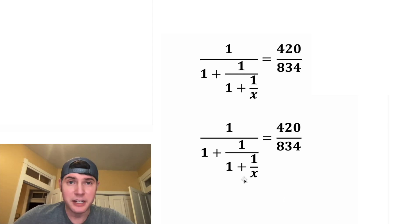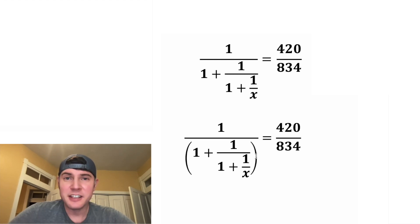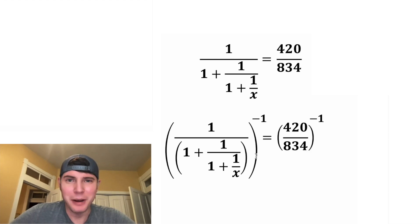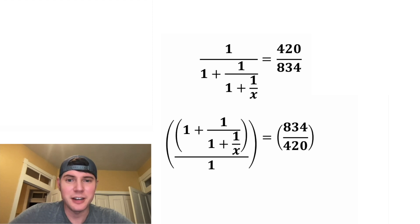Let's group all this stuff in the denominator with parentheses. And then let's do both sides to the negative one power. Ultimately, this means taking the reciprocal. So this 420 over 834 is gonna become 834 over 420. And this right here will also be flipped upside down.